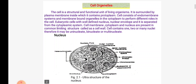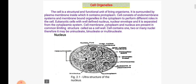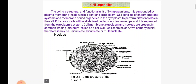The cell is a structural and functional unit of living organisms. It is surrounded by plasma membrane, inside which it contains protoplasm. Cell contains endomembrane system and membrane-bound organelles in the cytoplasm to perform different roles. Eukaryotic cells are with nucleus and nuclear envelope, separated from the cytoplasmic system. Cell membrane, cytoplasm and nucleus are present in a common limiting structure called the cell wall.